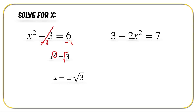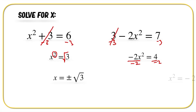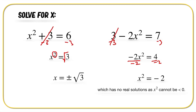Let's do the next one. We can subtract three from both sides, that's going to cancel out the three, and we end up getting minus two x squared is equal to four. Then if we divide by minus two on both sides, we get x squared is equal to negative two. We notice that there are no real solutions, because x squared cannot be less than zero.